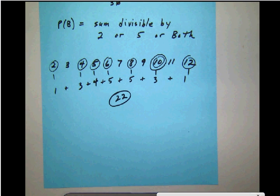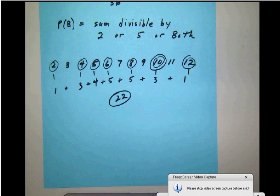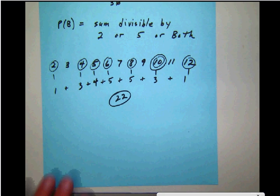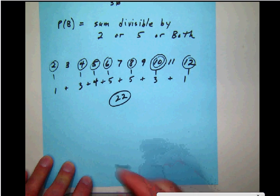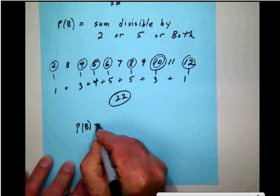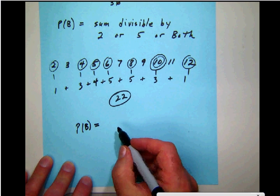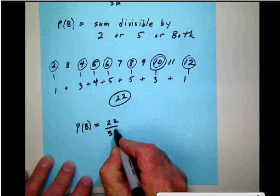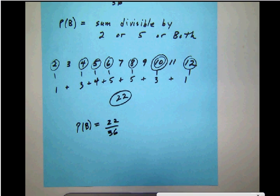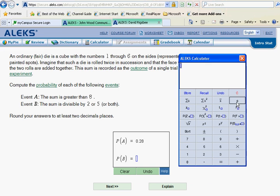So what we're going to do then is go ahead and calculate our probability. Once again, the probability of B is going to be the total ways to get B—in our case 22—divided by the total ways possible, which is going to be 36. So we're going to take our ALEKS calculator here, we're going to divide that out. So we will take our 22, divide that by our 36, we're going to get 0.61111 forever. And so rounding to two decimal places, 0.61. Let's check and see that ALEKS is happy. And they are.